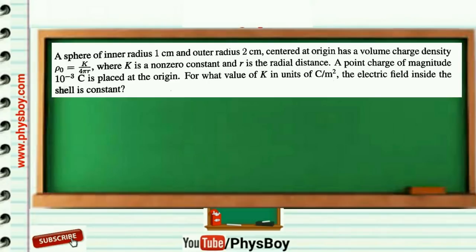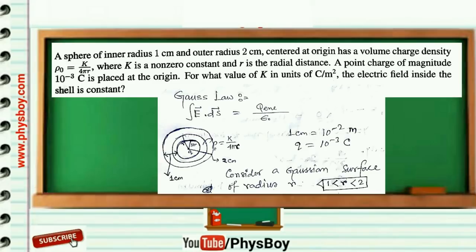Next question: a sphere of inner radius 1 cm and outer radius 2 cm, centered at origin, has volume charge density ρ₀ = k/(4πr), where k is a non-zero constant and r is the radial distance. A point charge of magnitude 10⁻³ coulomb is placed at the origin. For what value of k in units of coulomb per meter² is the electric field inside the shell constant? Consider a spherical Gaussian surface of radius r where 1 < r < 2.